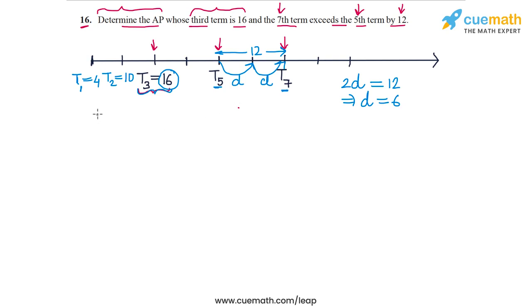So this AP is the progression 4, 10, 16, and then the fourth term will be 22, the fifth term will be 28, the sixth will be 34, and the seventh will be 40, and so on. We can see that the difference between the fifth and the seventh term is 12.